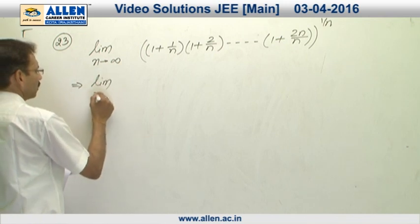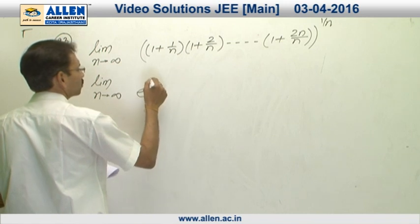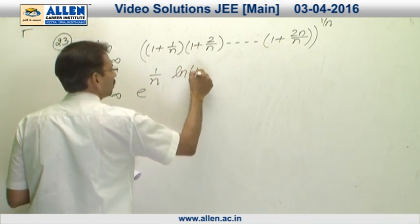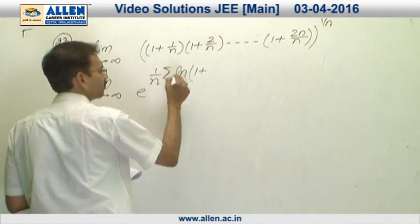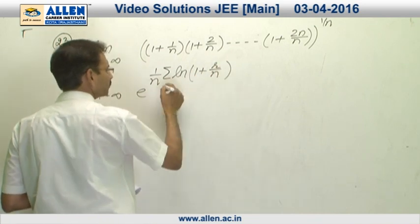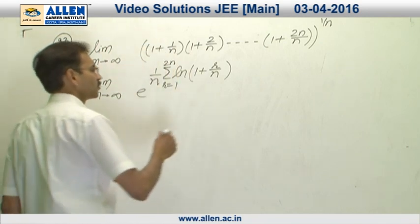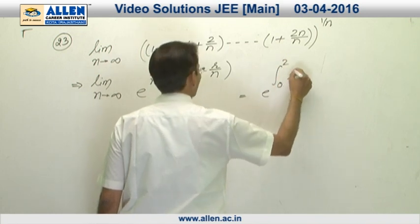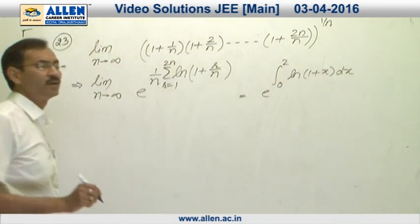Now, we are going to take log and write this expression as e raise to the power 1 upon n, ln 1 plus 1 upon n and so on. That expression can be written in the form of summation ln 1 plus r by n, where r is from 1 to 2 n. Now, we can write this expression as e raise to the power 0 to 2 ln 1 plus x. This is summation of series using definite integral.